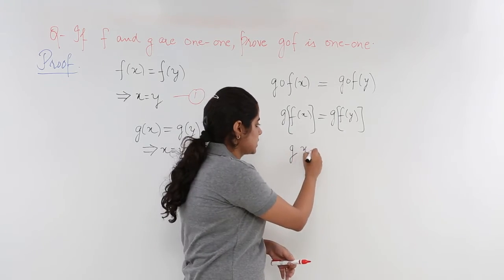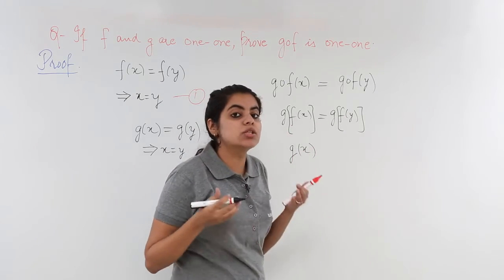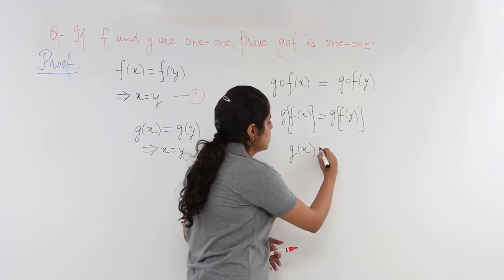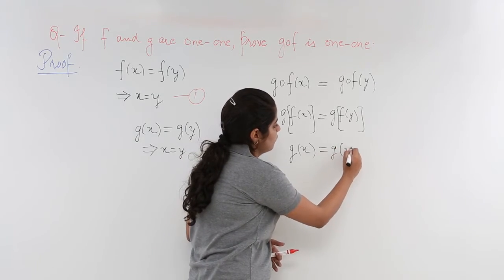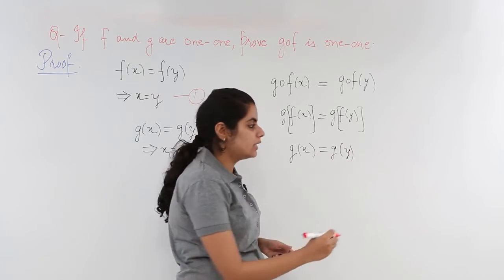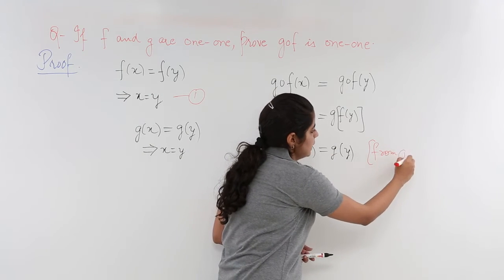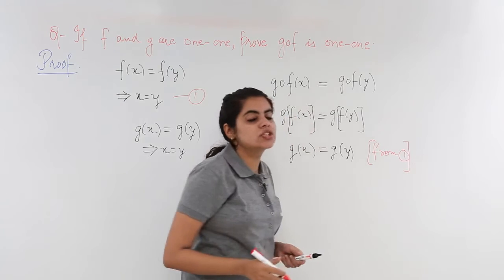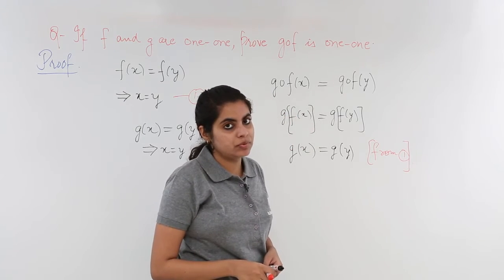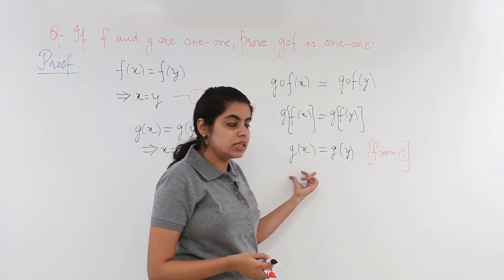Similarly, in place of f(y) I can write y, so it is g(y). And how did we write this? We didn't write this because we wanted to write this as it is. It was taken from an equation which was named as one.